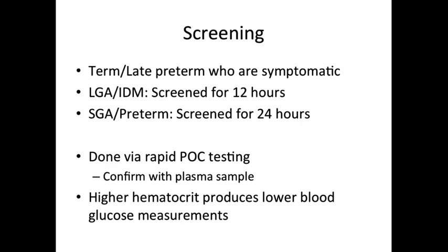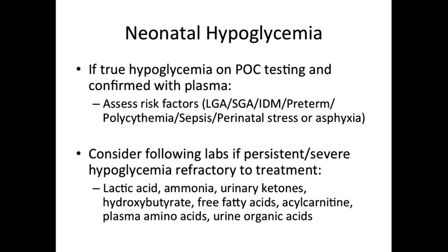Hypoglycemia screening is performed in any term or late preterm infant who is symptomatic. In addition, large for gestational age and infants of diabetic mothers are screened for 12 hours, while small for gestational age and preterm infants are screened for 24 hours. Screening is done via rapid point-of-care testing with confirmation by plasma sample if a low blood glucose value is noted. It is important to note that higher hematocrits often produce lower blood glucose measurements, which is often why polycythemic infants can also have hypoglycemia.